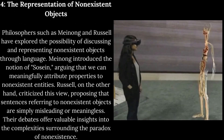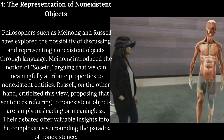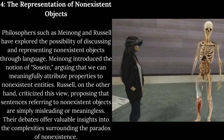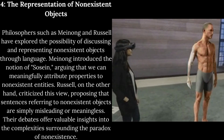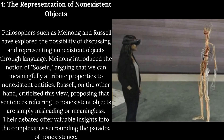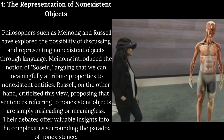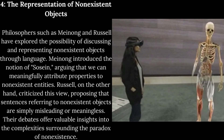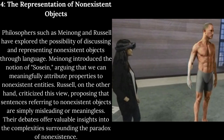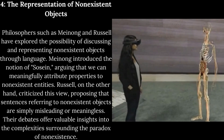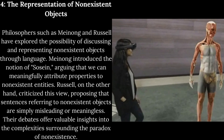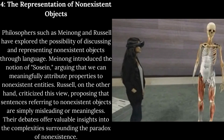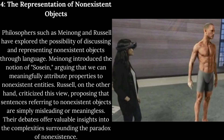4. The Representation of Non-Existent Objects. Philosophers such as Meinong and Russell have explored the possibility of discussing and representing non-existent objects through language. Meinong introduced the notion of Sosein, arguing that we can meaningfully attribute properties to non-existent entities. Russell, on the other hand, criticized this view, proposing that sentences referring to non-existent objects are simply misleading or meaningless. Their debates offer valuable insights into the complexities surrounding the paradox of non-existence.